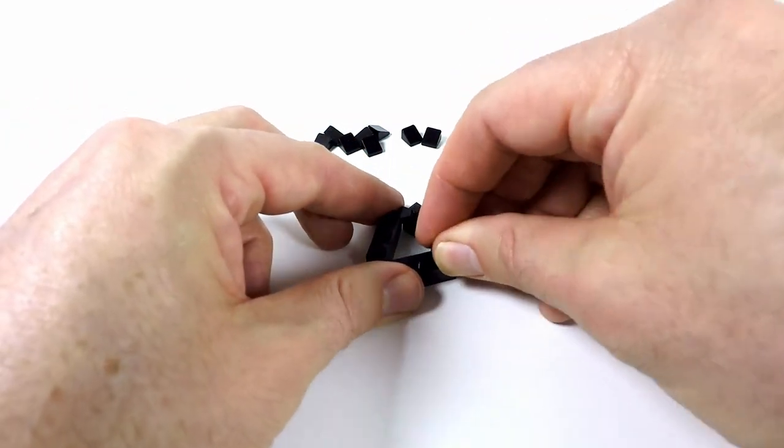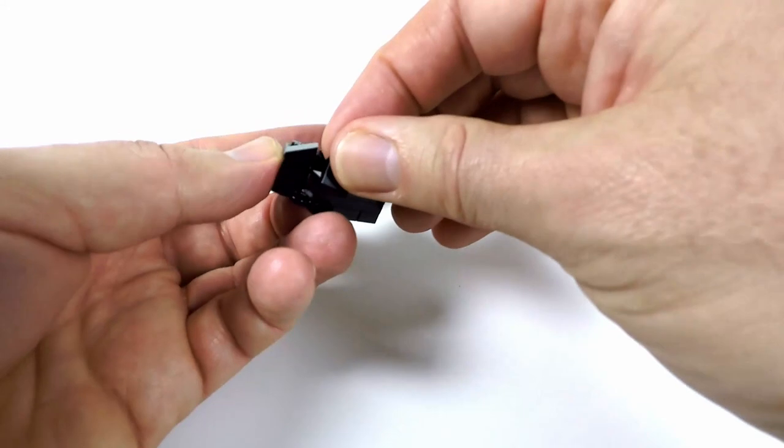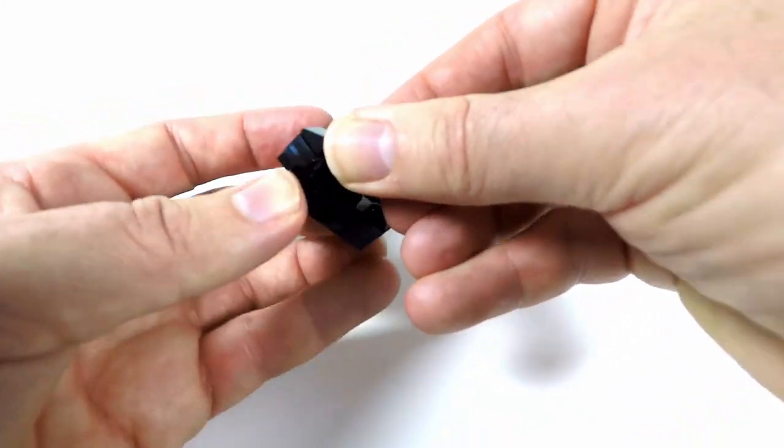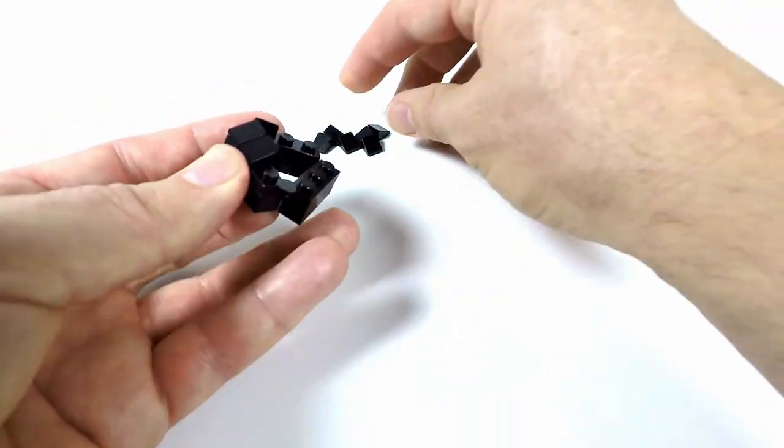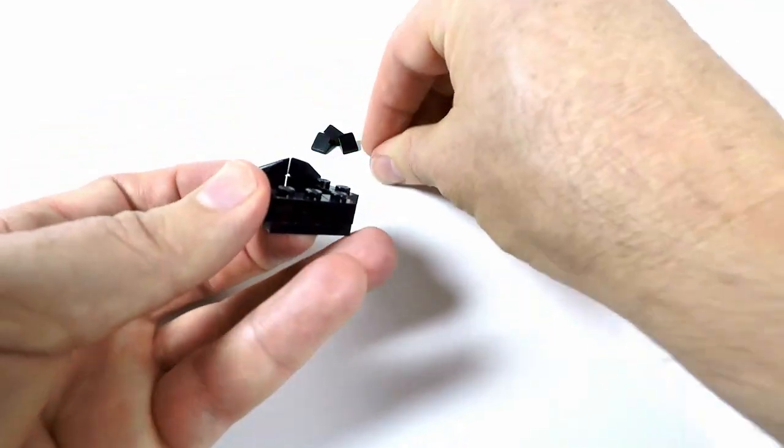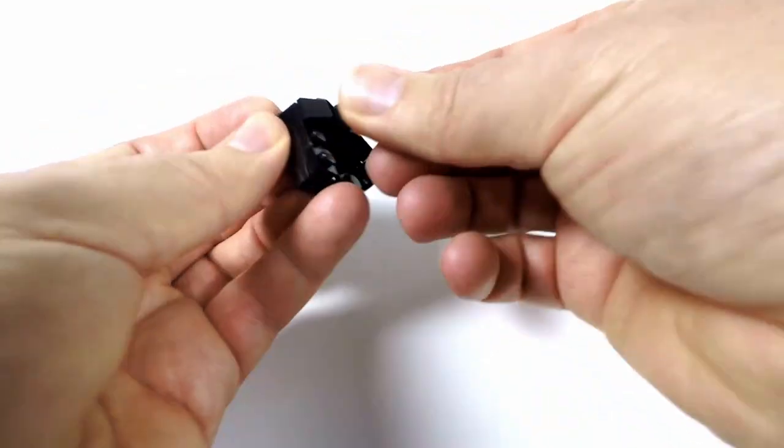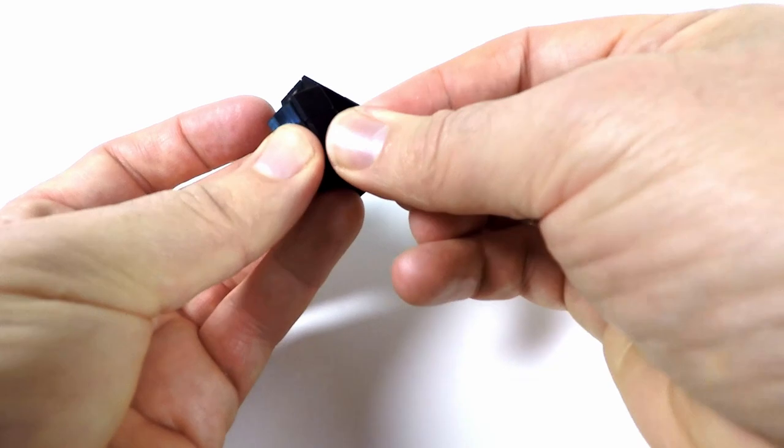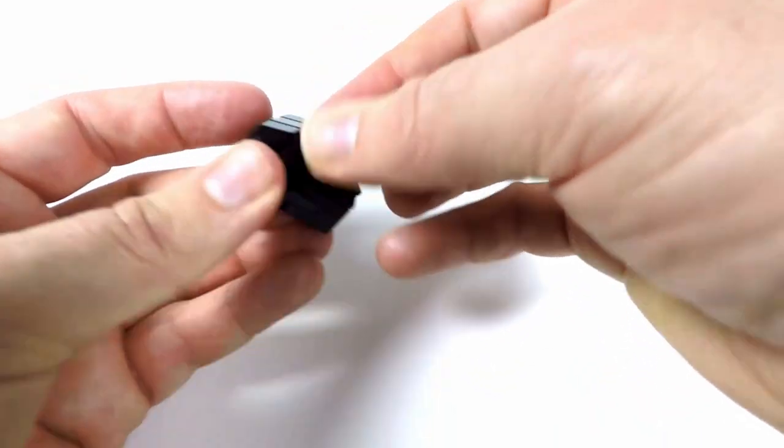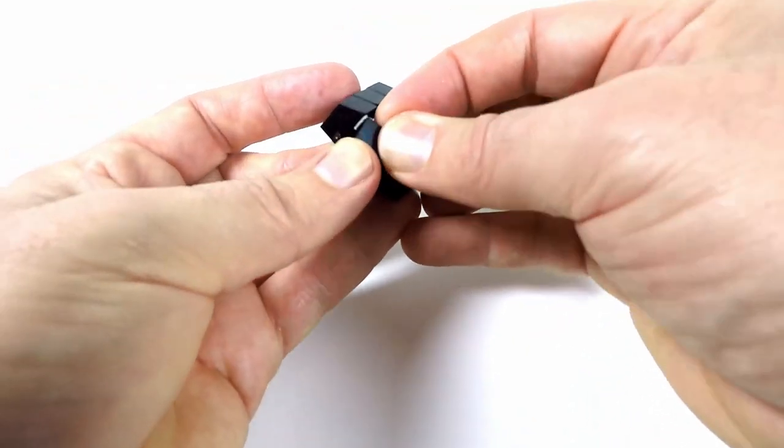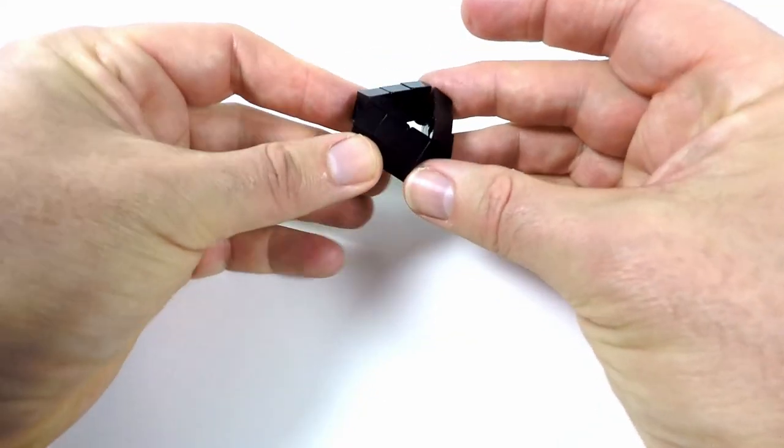And now we'll go ahead and we'll use these 1x1 slopes just to finish this off again. So we'll have them so they're facing inwards like that. And that is the 3x3 cube holder.